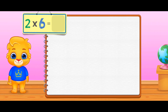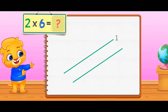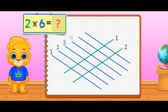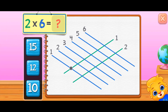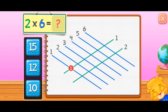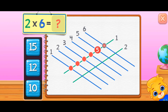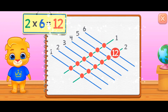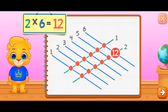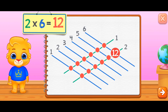Two times six. Two times six equals — one, two, three, four, five, six, seven, eight, nine, ten, eleven, twelve. Two times six equals twelve.